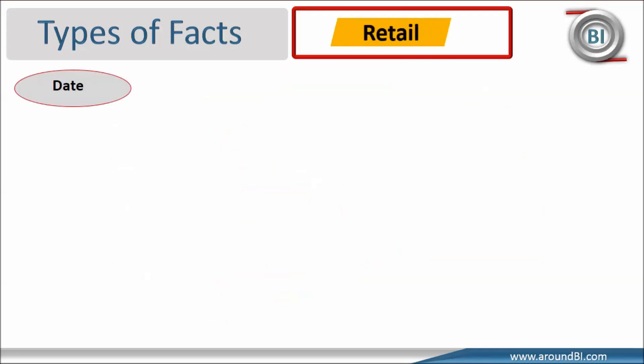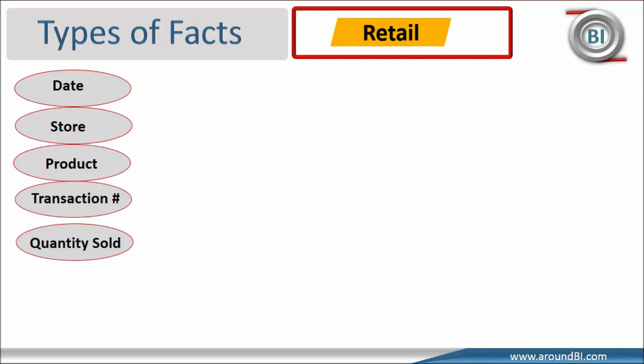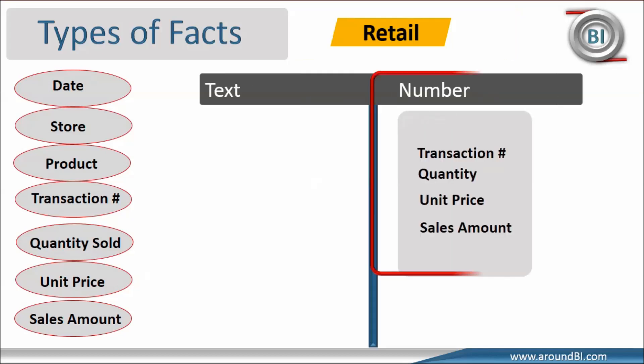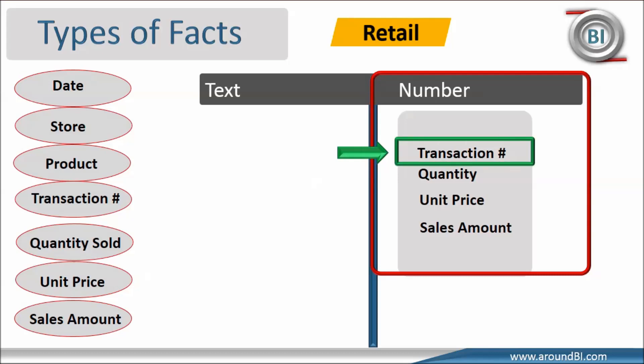In our retail sales, for every transaction we gather date, store name, product, transaction number, quantity, unit price, and sales amount. Out of all these data points, transaction number, quantity, unit price, and sales amount are numeric entities. In our tutorial on degenerate dimension, we concluded that transaction number is a dimension value. The remaining three numeric fields — quantity, unit price, and sales amount — are facts in our case. Let's start from there.